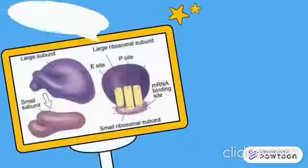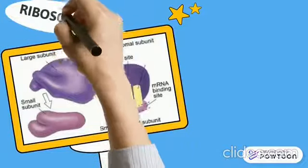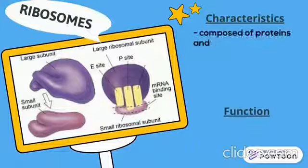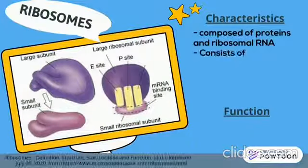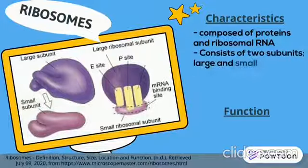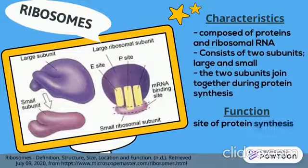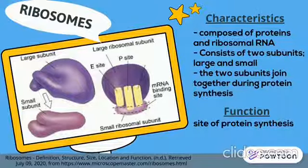Ribosomes are composed of proteins and ribosomal RNA. They consist of two subunits, large and small, and the two subunits join together during protein synthesis.